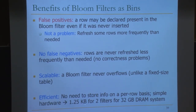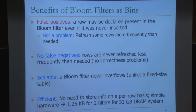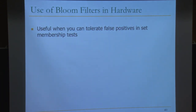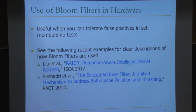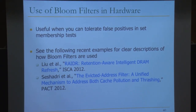This approach — called RAIDR in the paper by Jamie Liu et al., published at ISCA — leads to simple hardware. You can use only two filters totaling 1.25 kilobytes for a 32 gigabyte DRAM system. And you can reduce the refresh count by approximately 75%, since almost all rows can be refreshed every 256 milliseconds instead of 64ms.